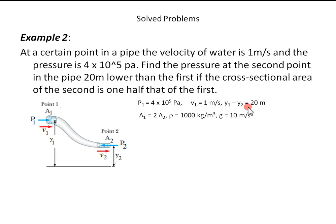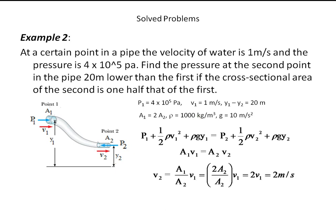We take Y1 minus Y2 equal to 20, because this point is 20 meters below. So Y1 minus Y2 is 20 meters. Writing Bernoulli's equation and taking the expression of equation of continuity, we have these things.